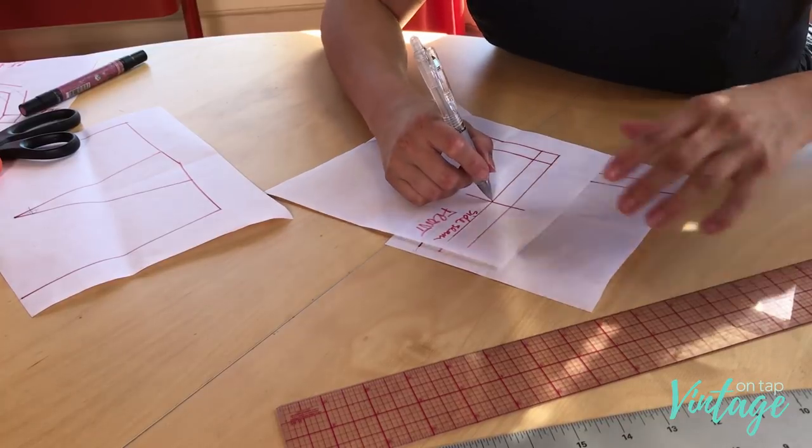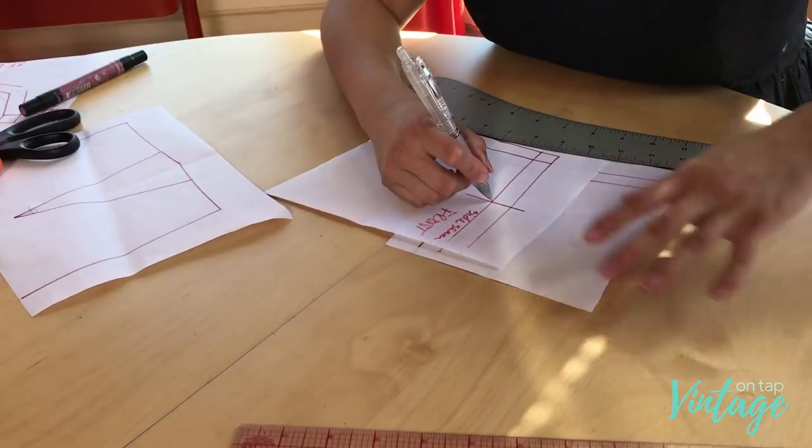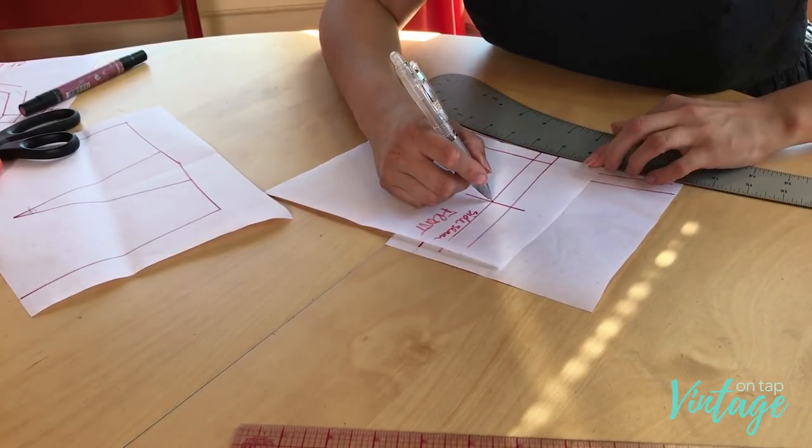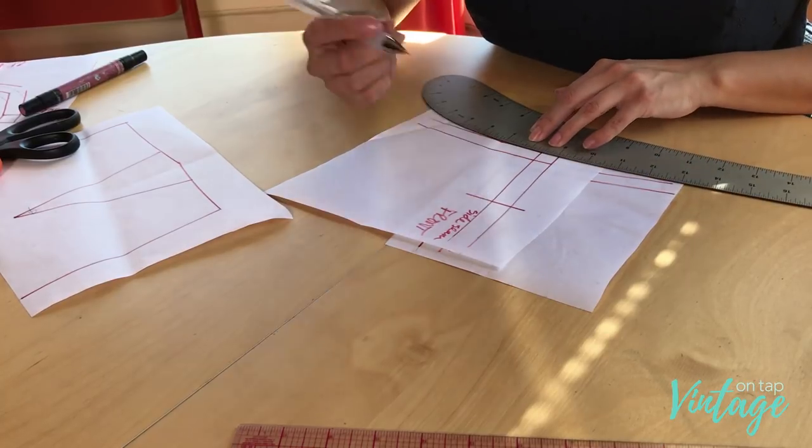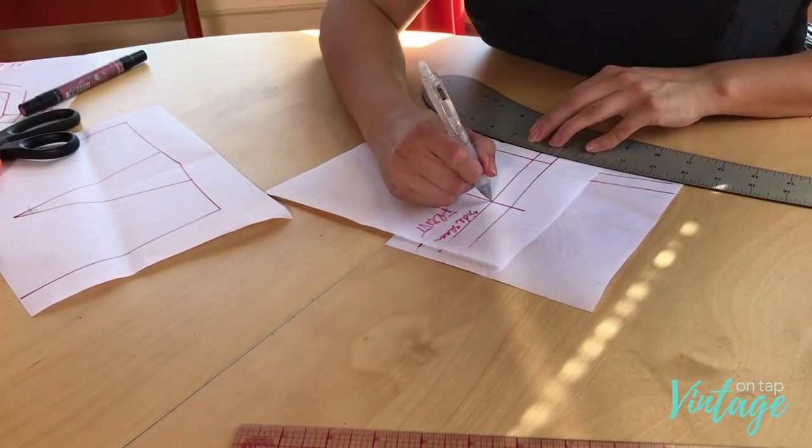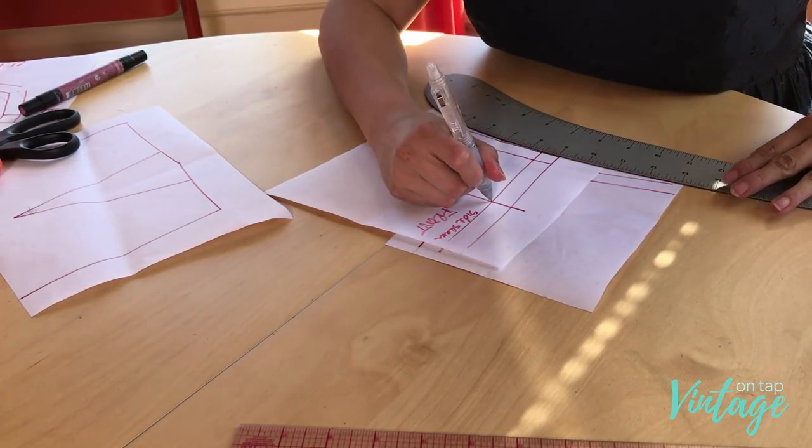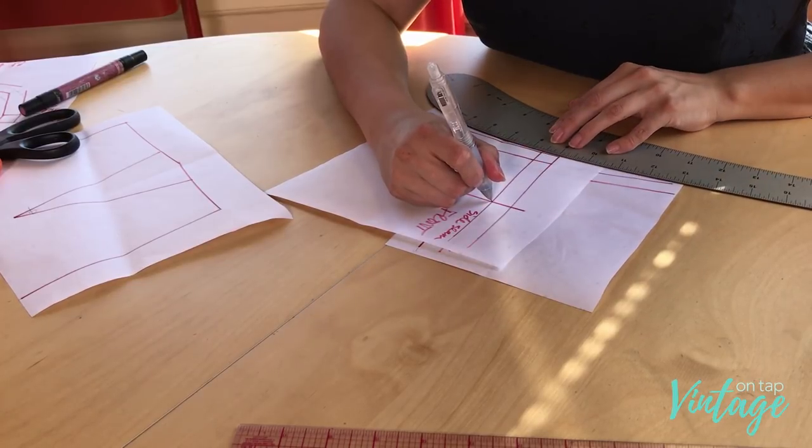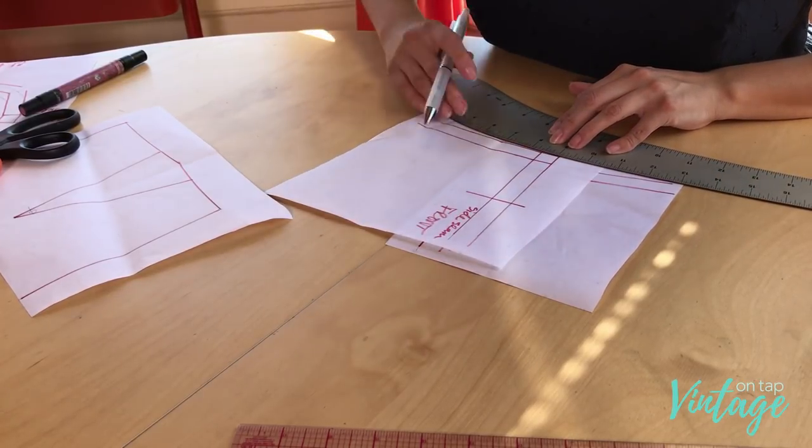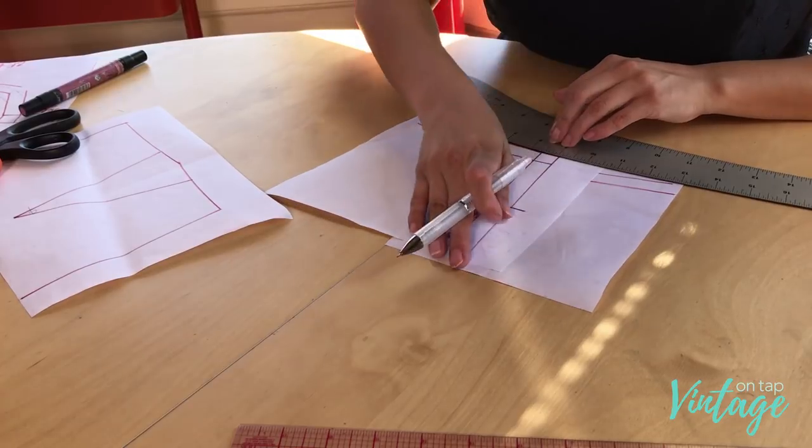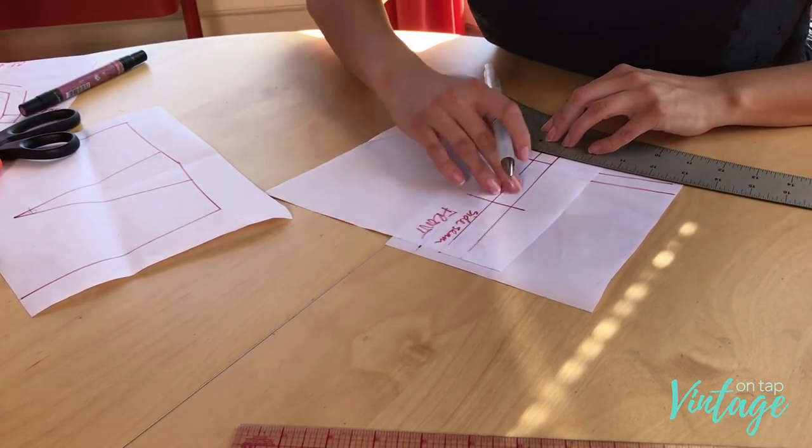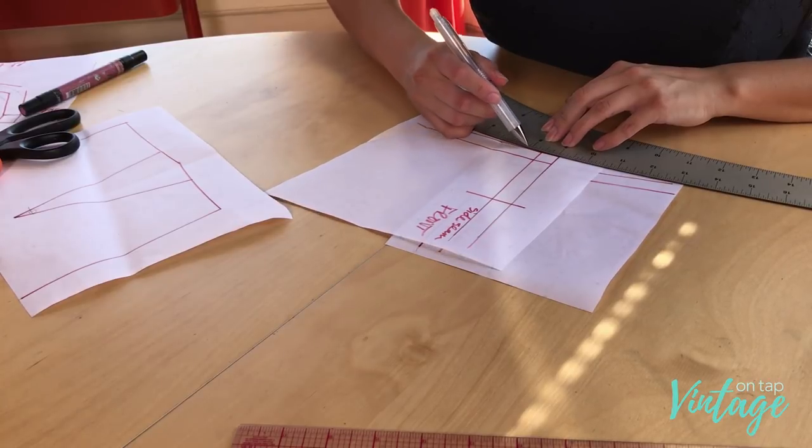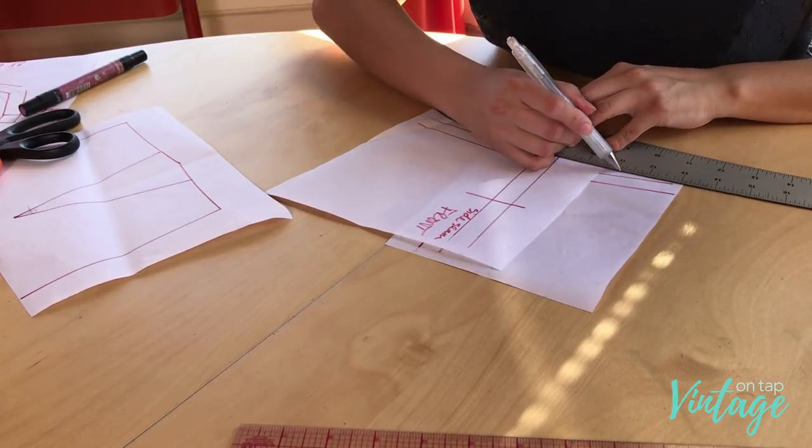So what I'm going to do is use my French curve and line it up along the front pattern piece. I'm actually going to redraw that bottom curve along the bottom of that bodice, right? Because you want to make sure that when you're sewing the two pieces together, it's a smooth, even curve along the bottom. So I'm going to match it up along the front and trace it out.